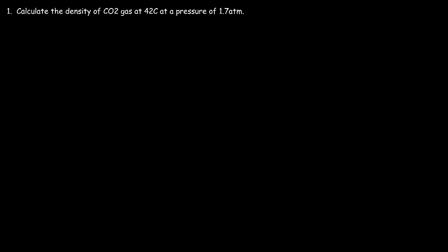Let's work on this problem. Calculate the density of carbon dioxide gas at 42 degrees Celsius at a pressure of 1.7 atm. So what equation can we use to calculate the density? Well, let's start with the ideal gas law equation: PV is equal to nRT.